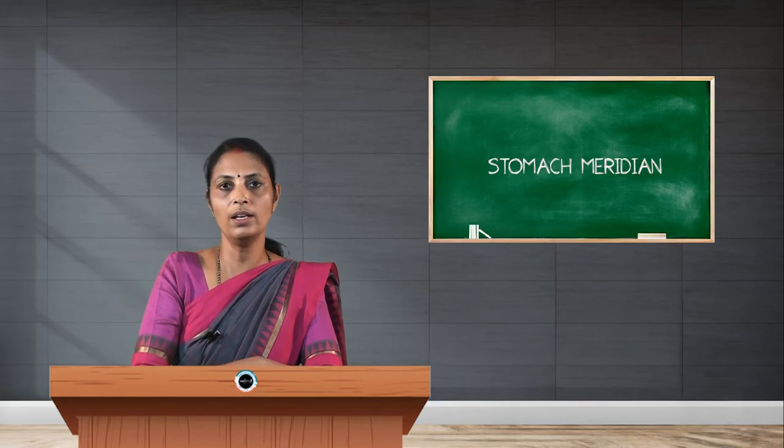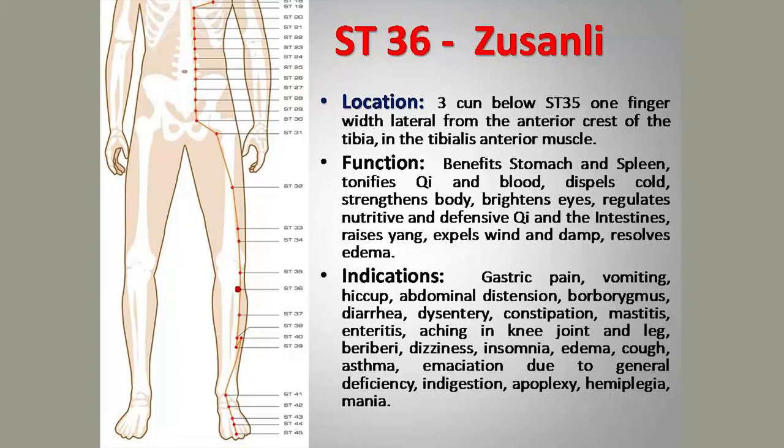Stomach 36 is one of the most important points to remember. It is always used in therapy to tonify the body and also works as a powerful immune-boosting point. Its location is 1 finger-breadth lateral to the lower border of the tibial tuberosity. Needling is 1 to 2 cun straight, and moxibustion can also be used at this point.